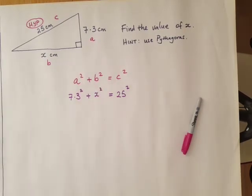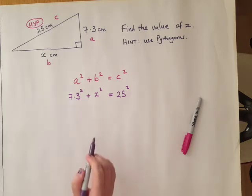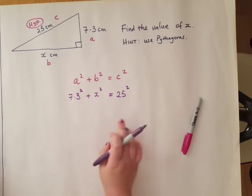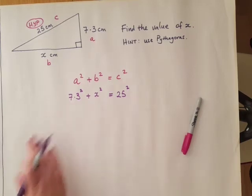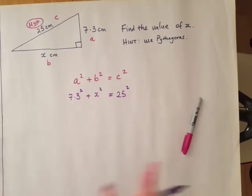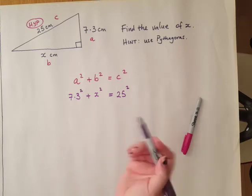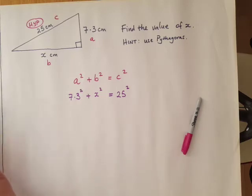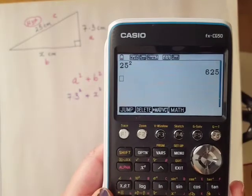At this stage, I'm going to work out what's 25 squared and what's 7.3 squared. You can do that later on if you want to, but I'm just going to calculate it now. So 25 squared, here it is.